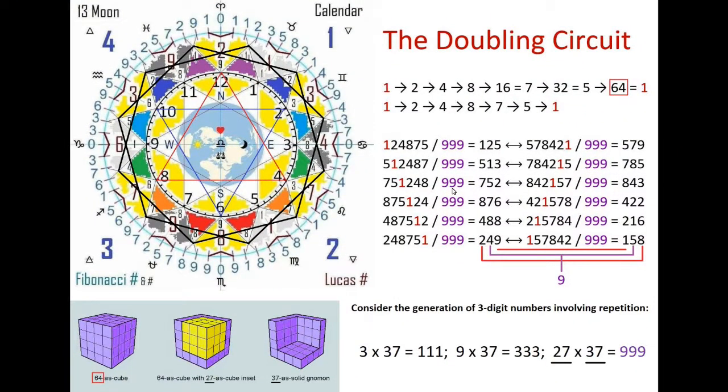The Fibonacci sequence is directly connected to phi, because if you take the last two numbers in a sequence and divide the last one with the one in front of it, you will get an approximation of phi.